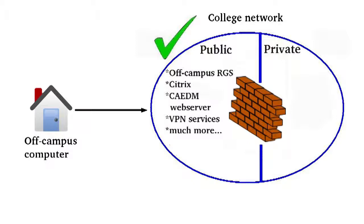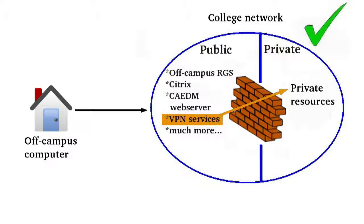The college has many public-facing resources, such as public RGS Blade workstations, Citrix applications, the CADEM web server, VPN services, and much more. These resources can be accessed using any internet connection anywhere in the world. The college has a few private resources that are only available from an on-campus internet connection. The college VPN services provide a way to gain access to these private resources. When you connect to the VPN, your computer establishes an encrypted link over the internet to CADEM and provides access to the private portion of the CADEM network. Once this connection is established, it's as if your computer were on campus.